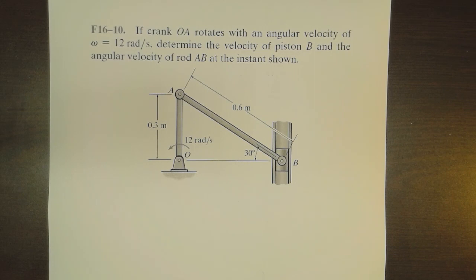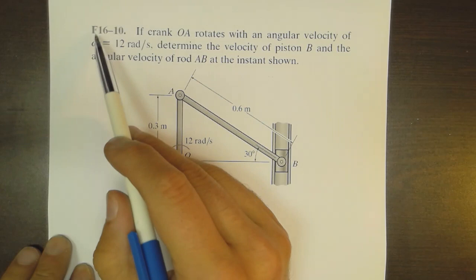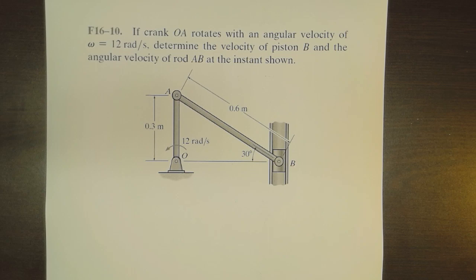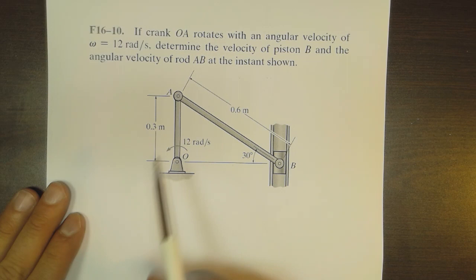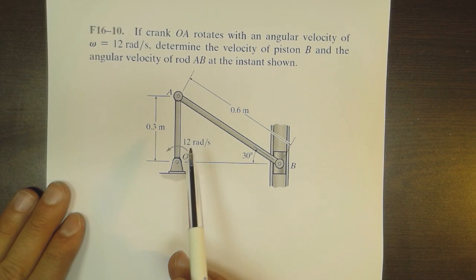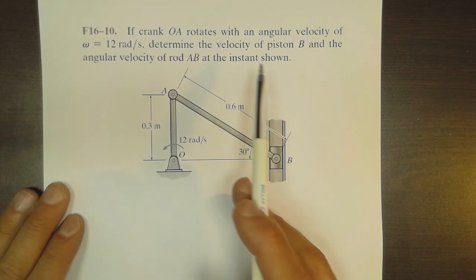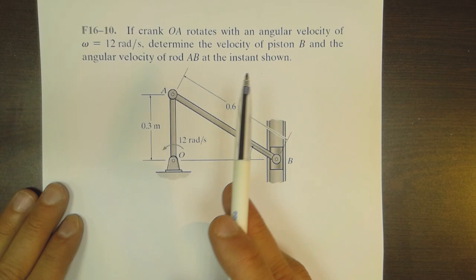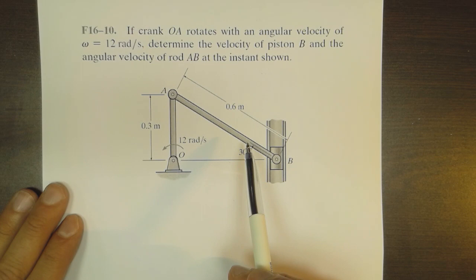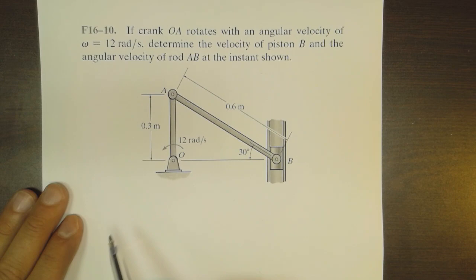Good evening and welcome to this tutorial on relative motion analysis for finding the velocity of a specific element in a moving mechanism. This example is fundamental problem 16-10 in Hibbeler's book, 13th edition, and in your class notes it is in lecture 15, example 3, page 6. We are dealing with a crank that rotates at 12 rad/s counterclockwise, and it is required to find the velocity of piston B and the angular velocity of rod AB when theta equals 30 degrees.